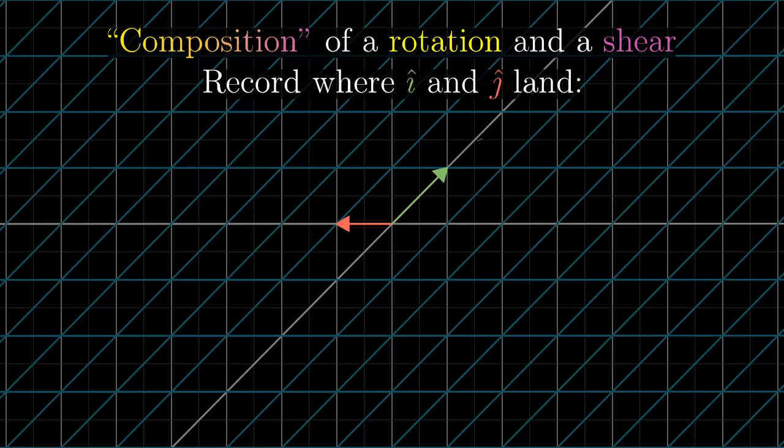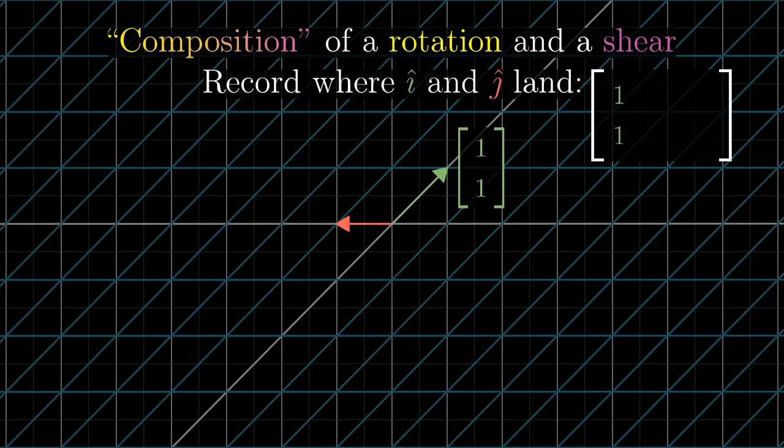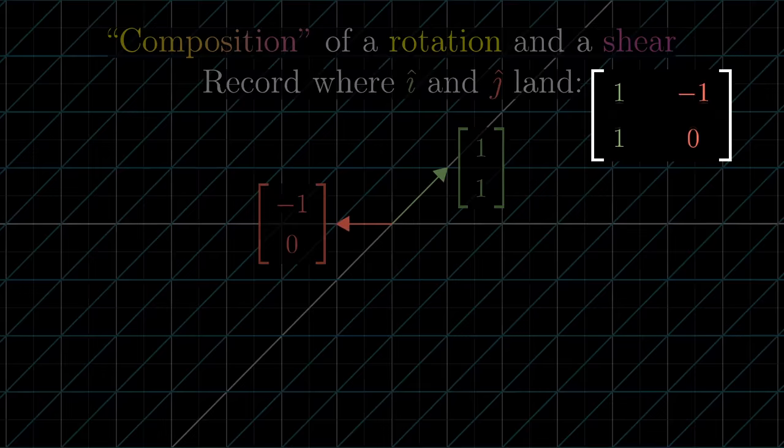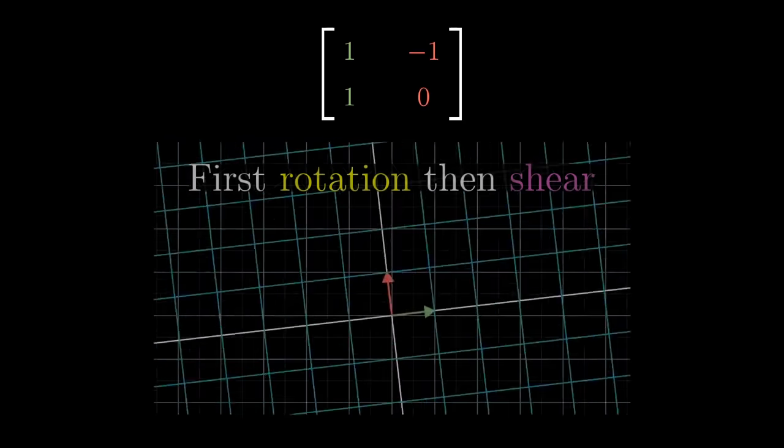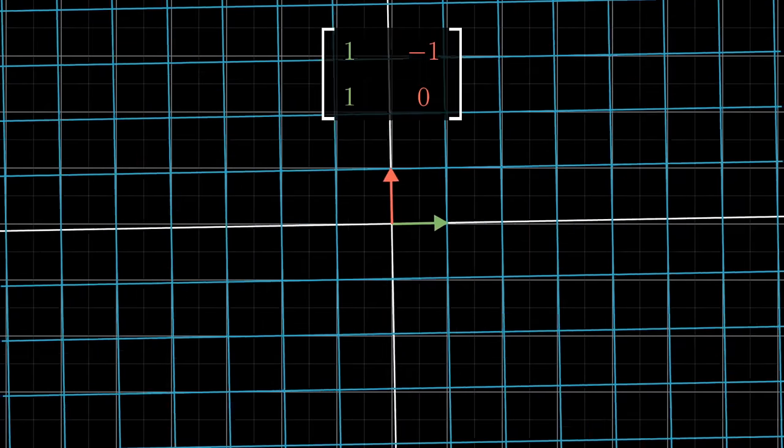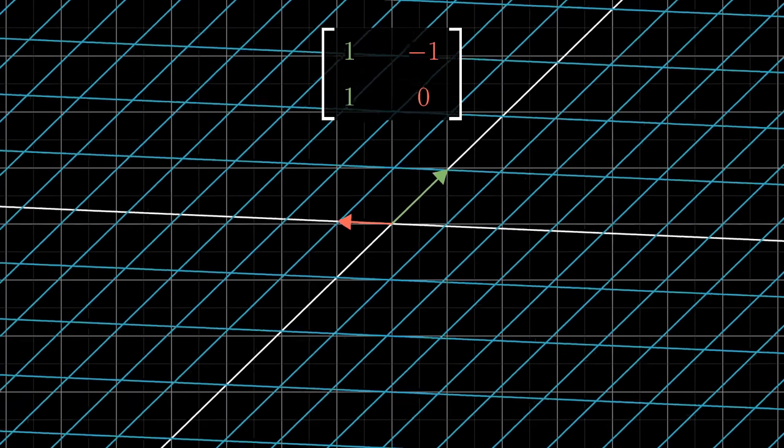In this example, the ultimate landing spot for i hat after both transformations is 1,1, so let's make that the first column of a matrix. Likewise, j hat ultimately ends up at the location negative 1,0, so we make that the second column of the matrix. This new matrix captures the overall effect of applying a rotation, then a shear, but as one single action, rather than two successive ones.